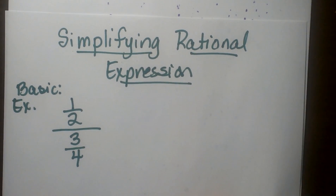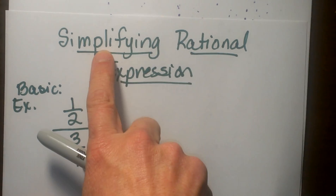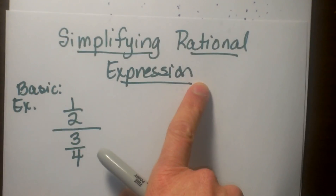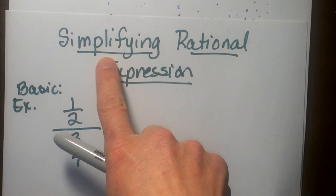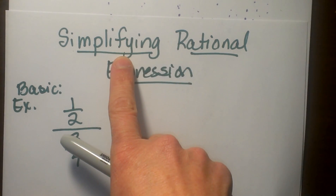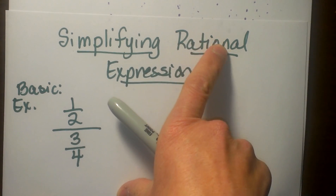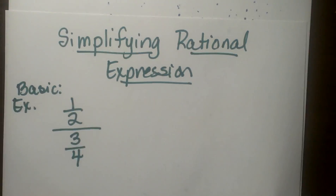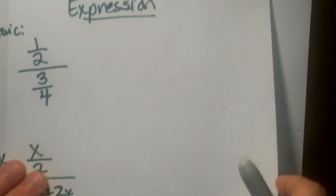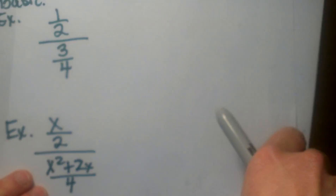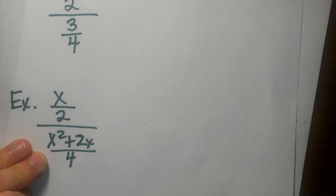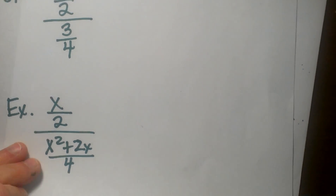Welcome to Moo Moo Math. Today we are going to talk about simplifying rational expressions. What that means is we are going to have some fractions, but we are going to have some variables in them, so they are going to look something like this, and we are going to learn how to simplify those and how to reduce them.